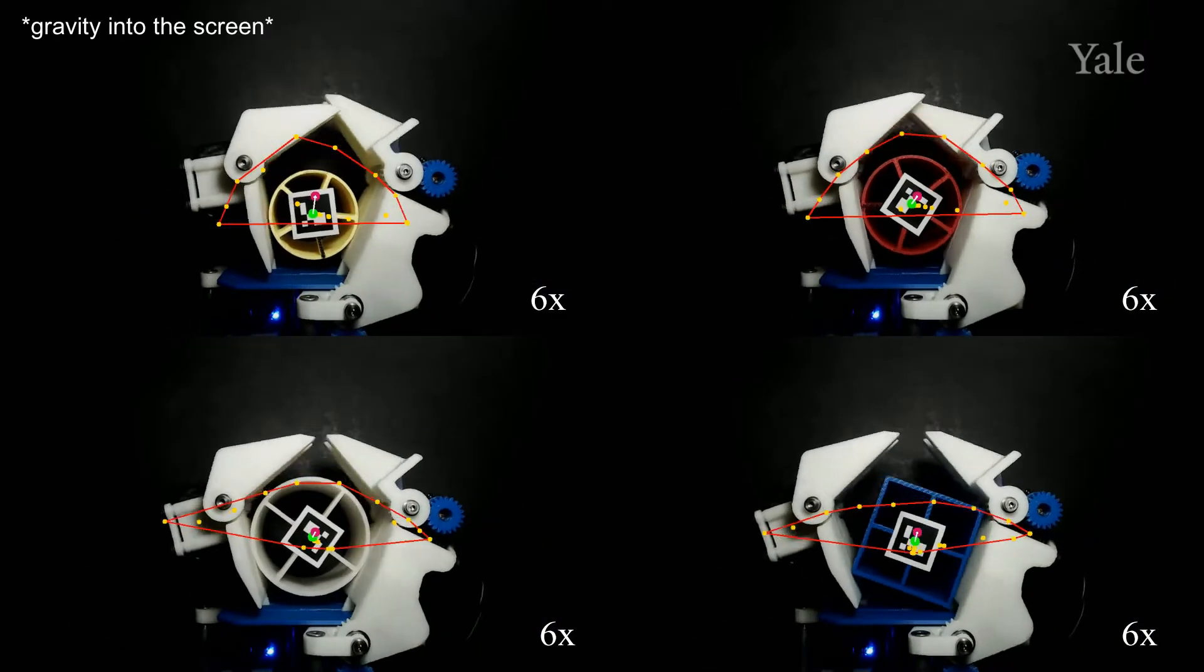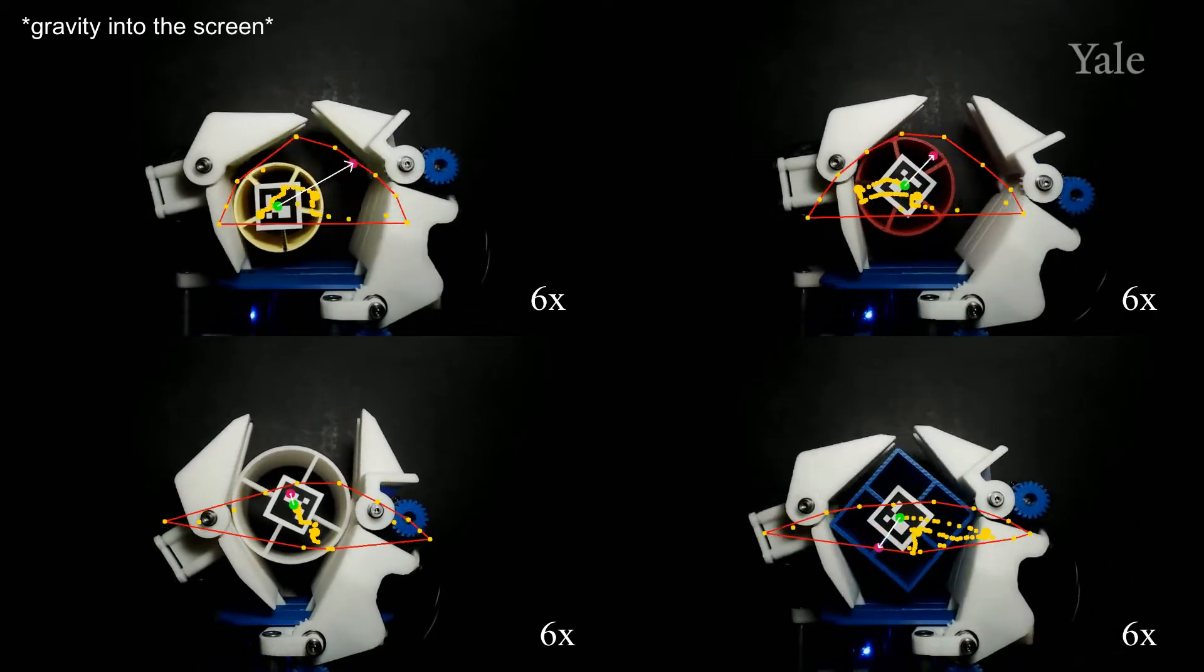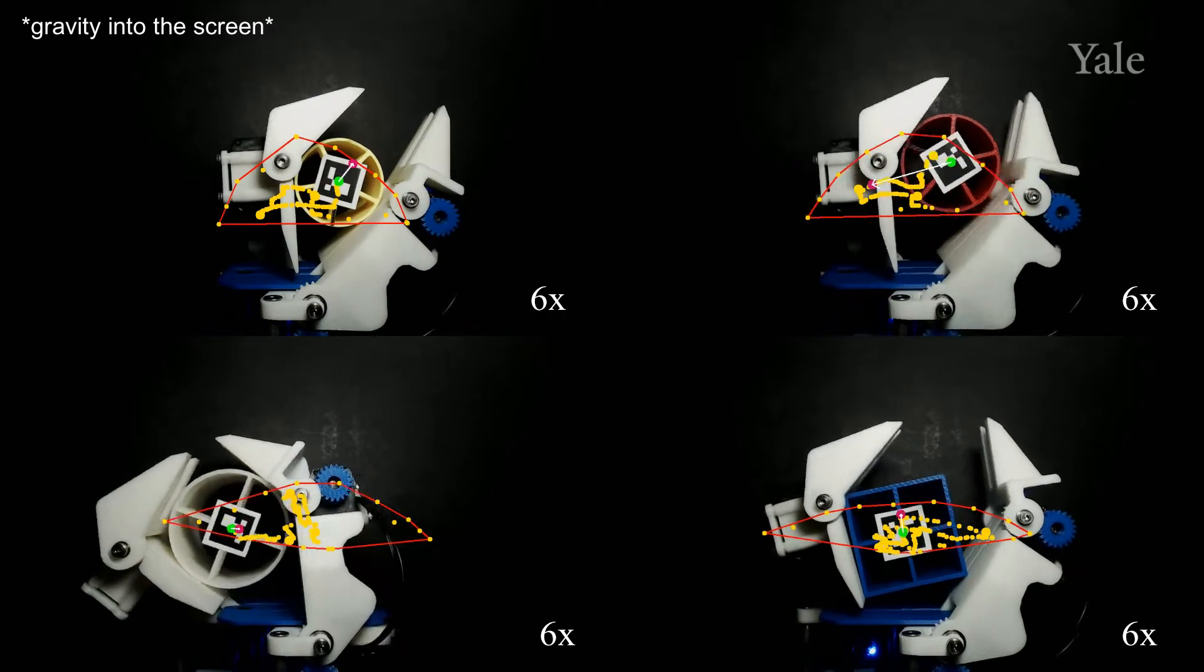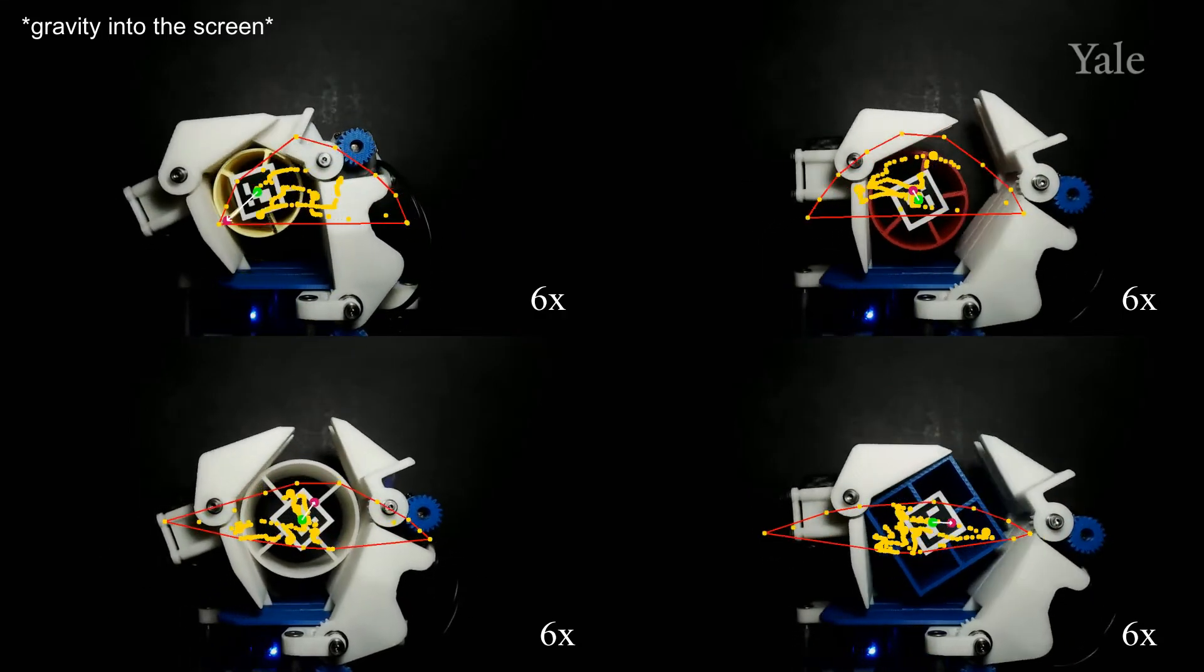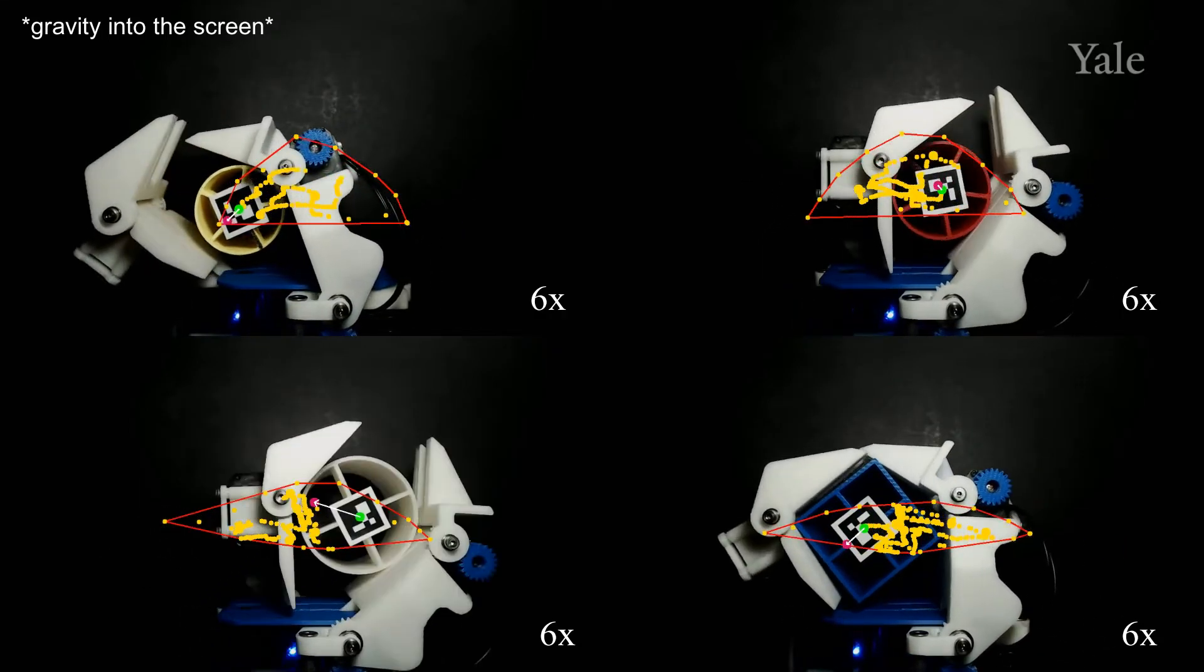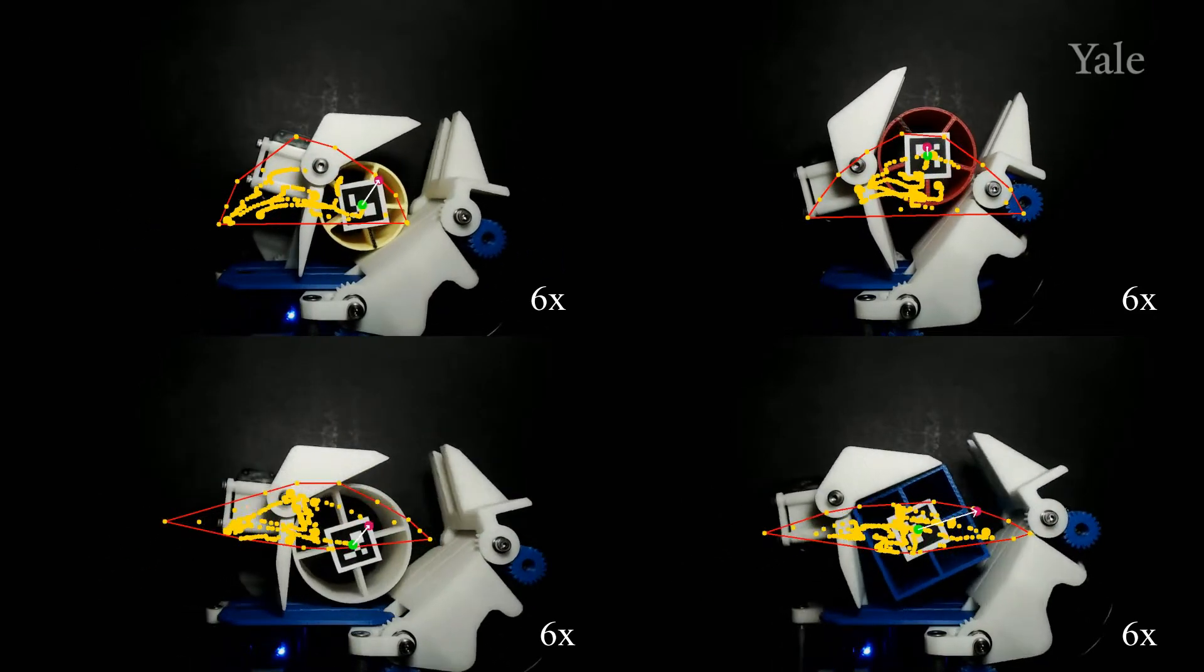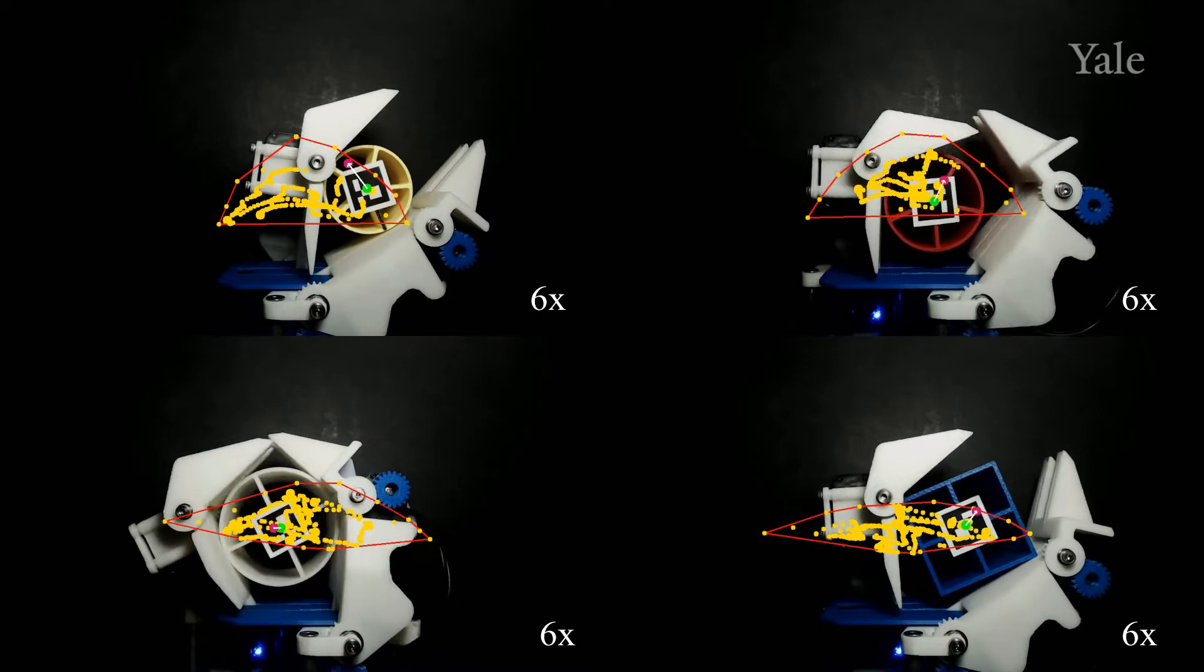We present a large array of experimentation to validate the hand design. First, we demonstrate the workspace of the hand with four different objects: three cylinders and one cube. Using visual servoing to close the loop, we control the object's position by servoing between four primitive grasps. By doing so, we are able to control the object throughout the majority of the hand's theoretical workspace.